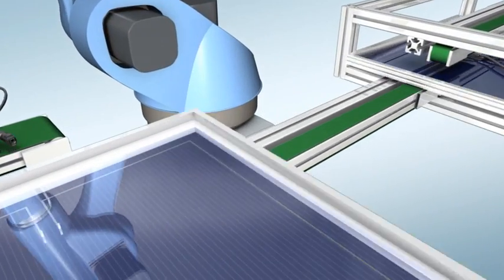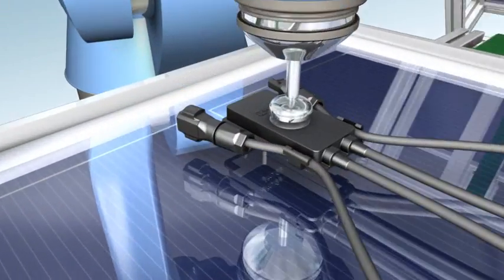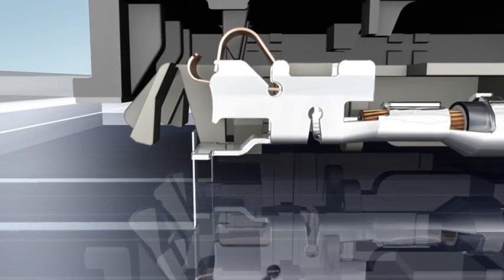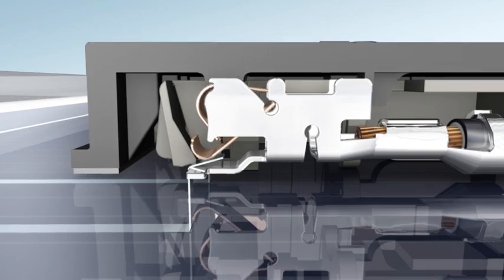The self-adhesive junction box is mounted onto the panel and automatically makes contact to the connecting ribbons in one single step.